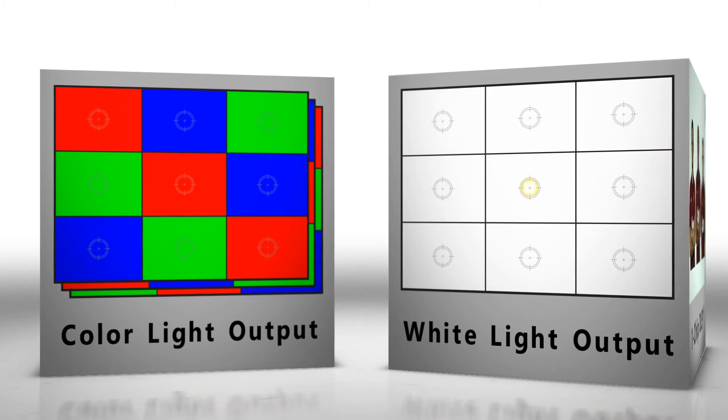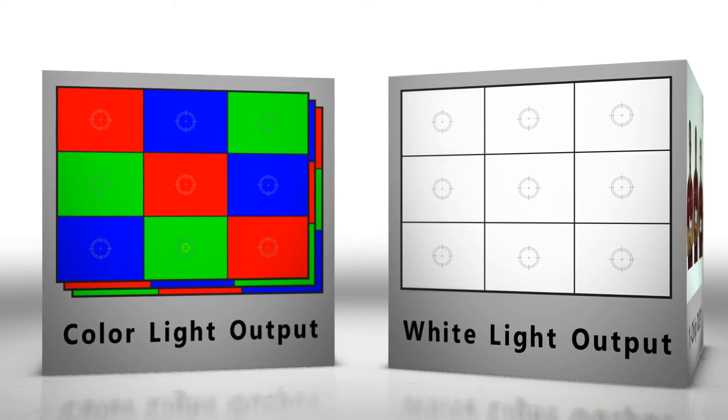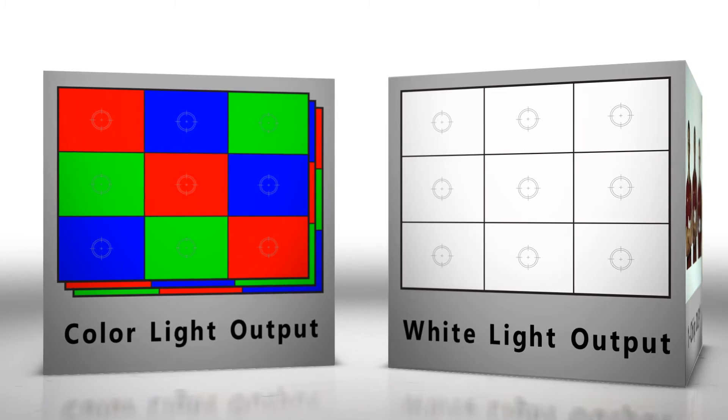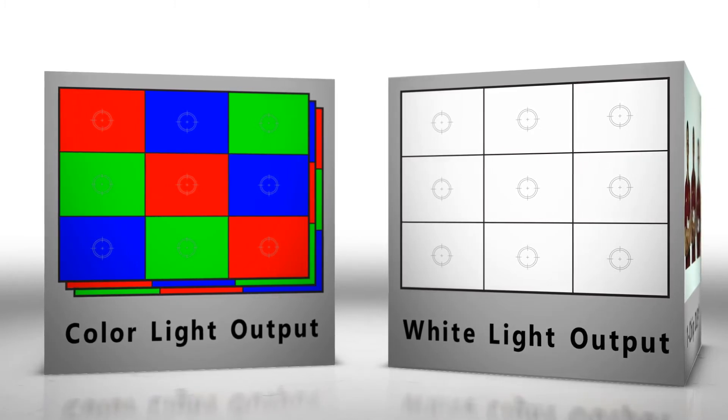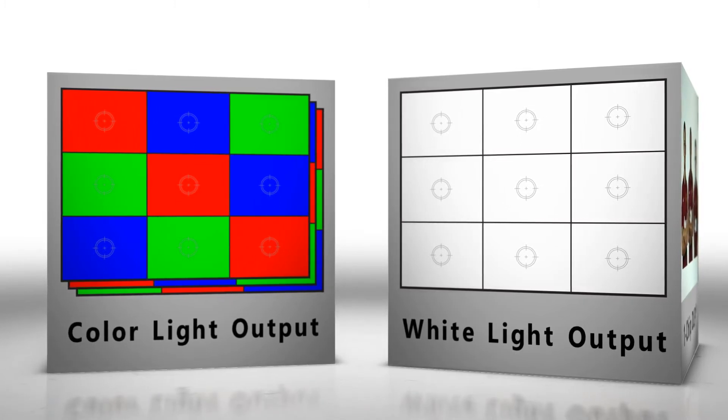Instead of measuring just white light, a new metric called color light output, or more simply color brightness, measures red, green, and blue. This value correctly describes the overall brightness of the projector, not just the brightness of the white.